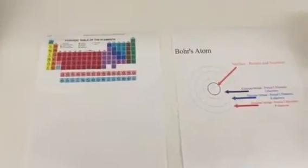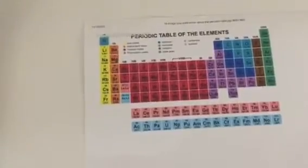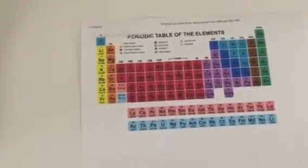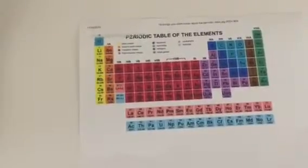First, identify the element we will be modeling. In this case, lithium. Lithium has an atomic number of 3 and an atomic mass of about 6.941, which we'll round to 7.